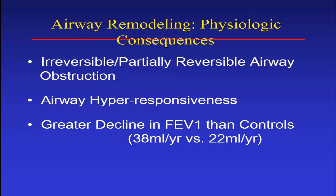The consequences of airway remodeling lead to physiologic changes. In some individuals, there's irreversible or only partially reversible airway obstruction. This gets into the issue of overlap between asthma and COPD, where there is clearly irreversible airway obstruction due to other mechanisms. Distinguishing these — the so-called asthma-COPD overlap syndrome, or ACOS — is a very difficult thing.